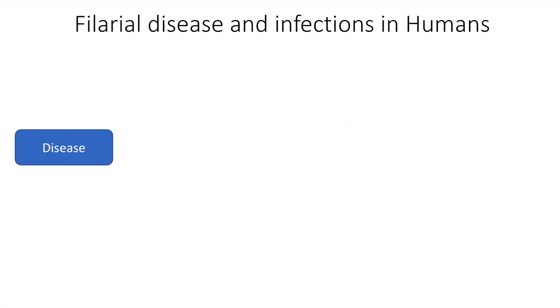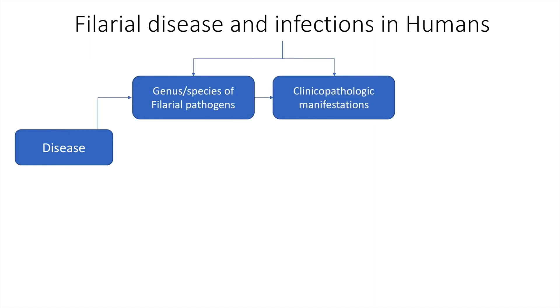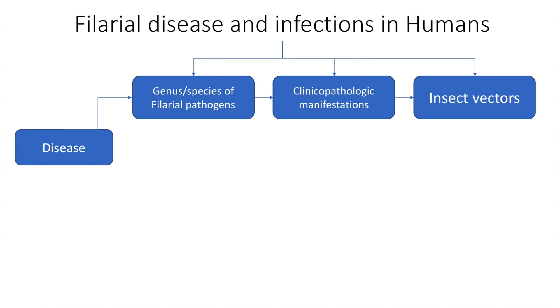To study filarial disease and infections in humans, we use the following heads: the genus or species of filarial pathogens, the clinico-pathologic manifestations, and the insect vectors.